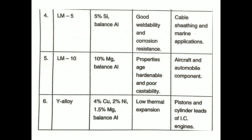Y-alloy has composition of 4% copper, 2% nickel, 1.5% magnesium, and balanced aluminium. Its properties include low thermal expansion, and its application is in pistons and cylinder heads of IC engines.